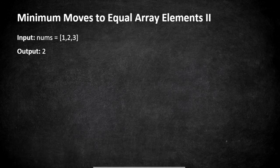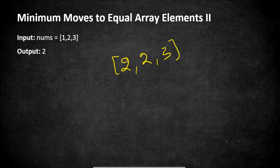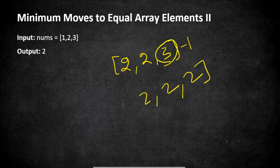Let's understand this with an example. The operations we can perform are either add one or subtract one from any element. If we add one to the first element it becomes [2, 2, 3]. Then we subtract one from the last element to get [2, 2, 2]. We used a total of two operations, and that is our output.